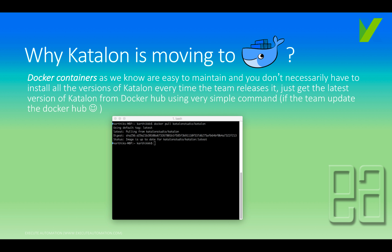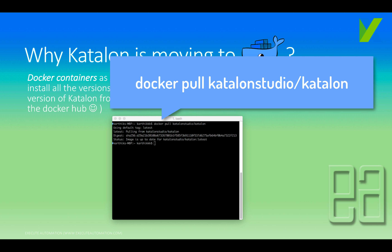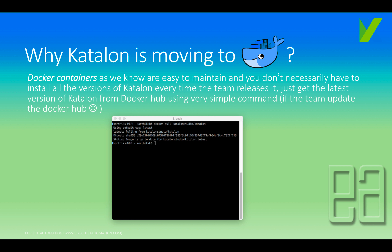Why is Katalon moving to Docker altogether? Docker containers are easy to maintain — you don't necessarily have to install all versions of Katalon every time the team releases it. Just get the latest version from Docker Hub using a very simple command, like 'docker pull katalonstudio/katalon', and boom — you get the latest version in your Docker container, as long as the team updates Docker Hub as part of their release cycle.